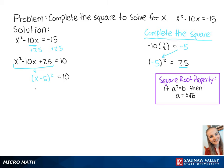Using the square root property, we get x minus 5 equals plus or minus the square root of 10. Now we add 5 to both sides of the equation to get x equals 5 plus or minus the square root of 10.